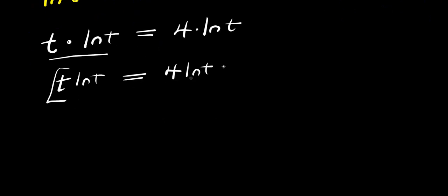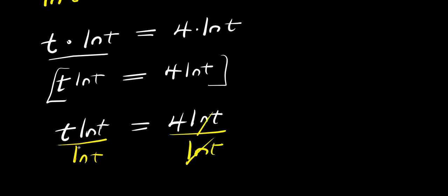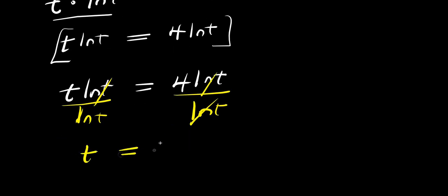We can solve this in two different ways. The first way is to divide each part of the equation by ln of t. We have t ln(t) equals 4 ln(t). Dividing both sides by ln(t), ln(t) cancels, and we get t equals 4 — the same solution we found earlier.